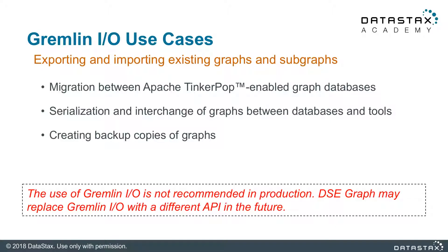We'll cover all of these sections in depth, but for right now we're going to focus on Gremlin IO. Here are some common use cases: migrating between Apache TinkerPop-enabled graphs, serializing graphs between databases and tools, and making backup copies of existing graphs.